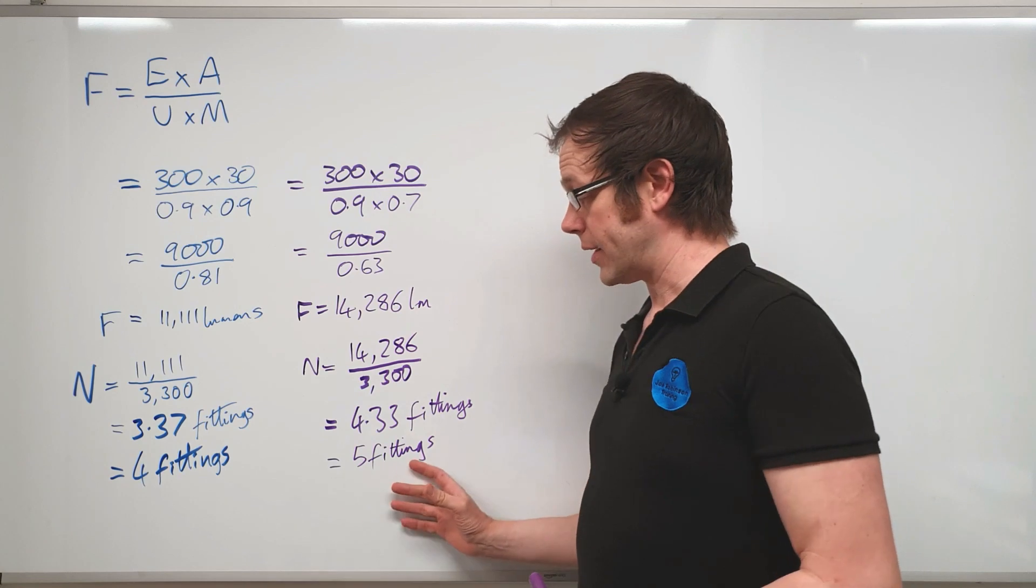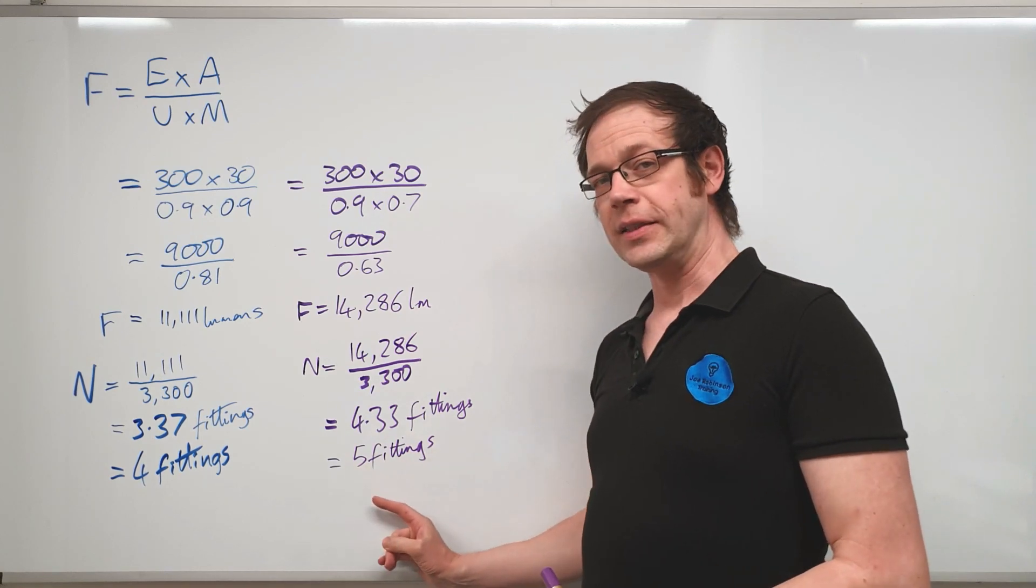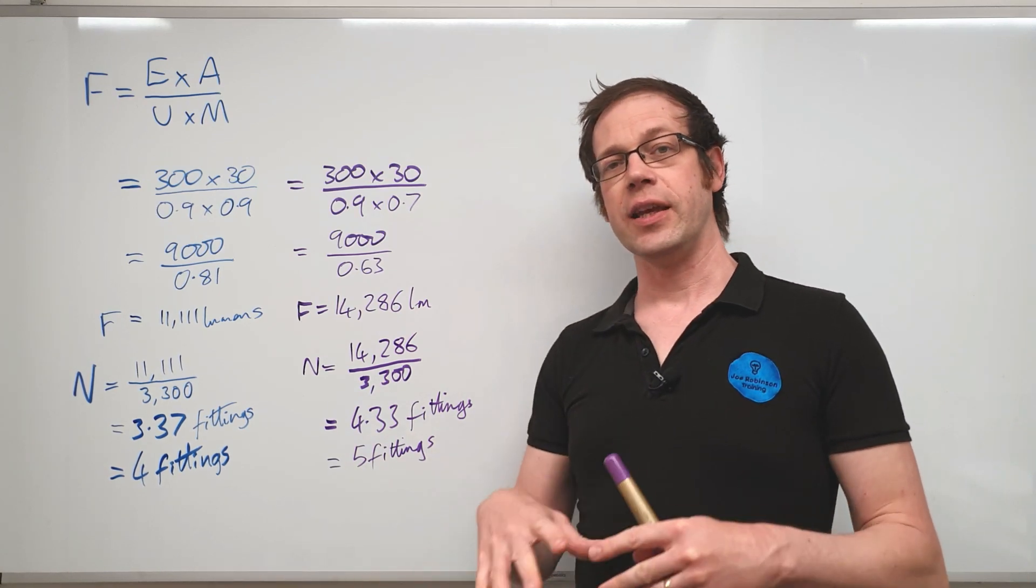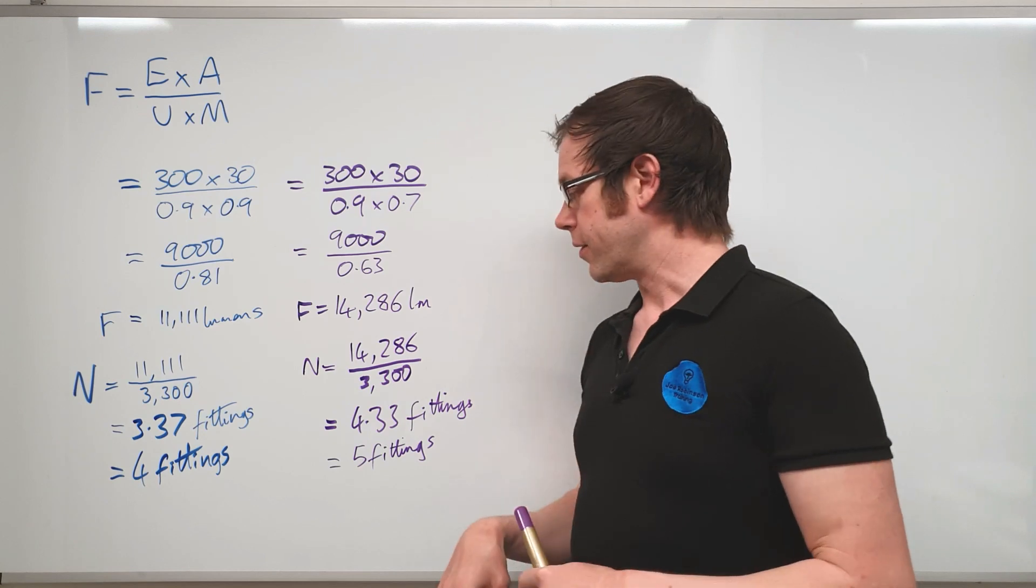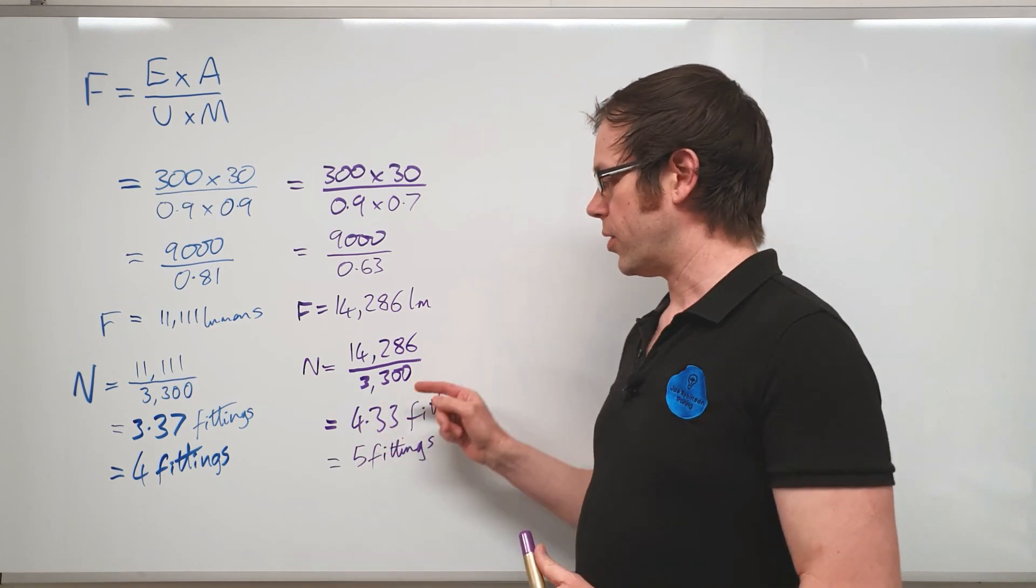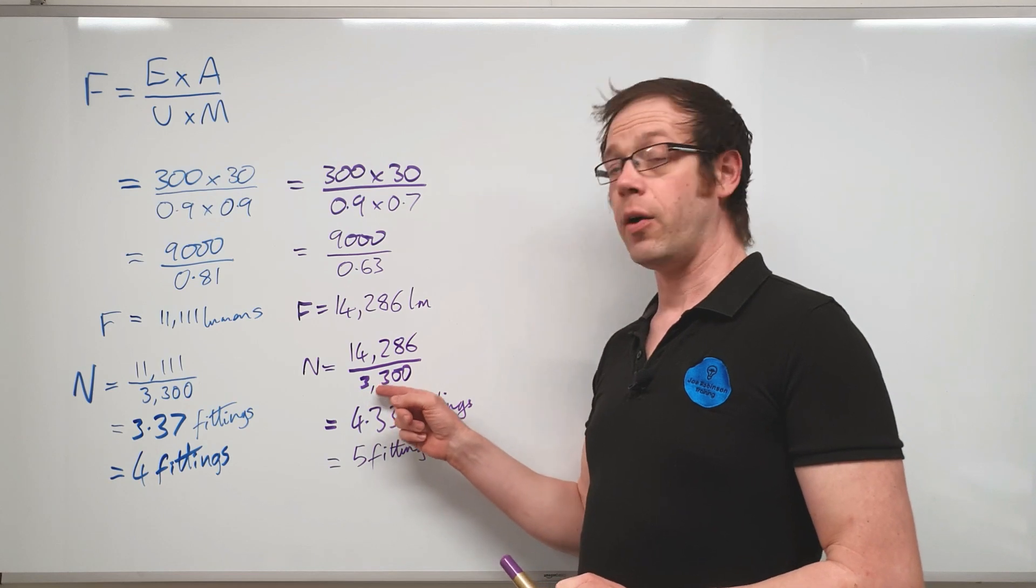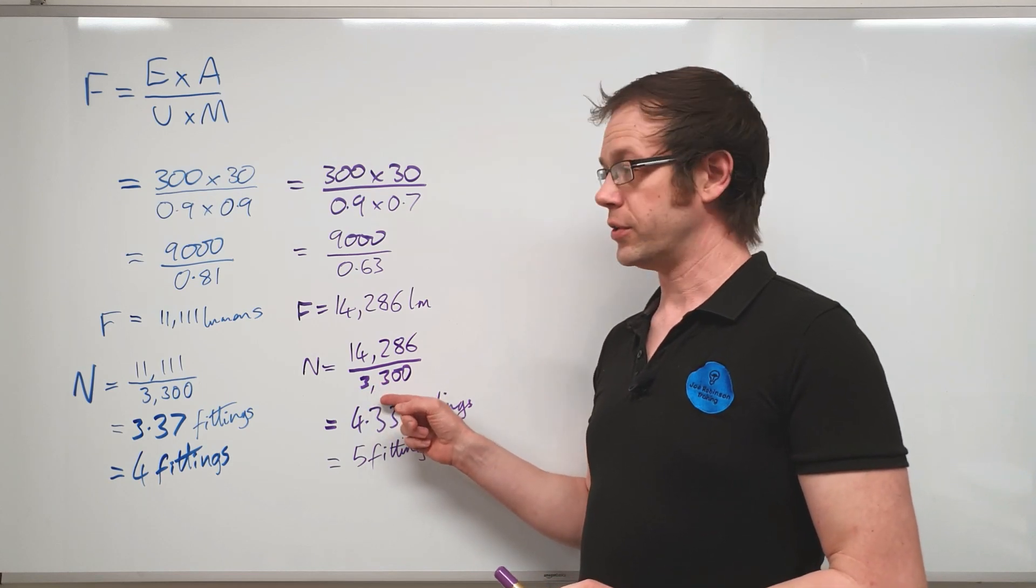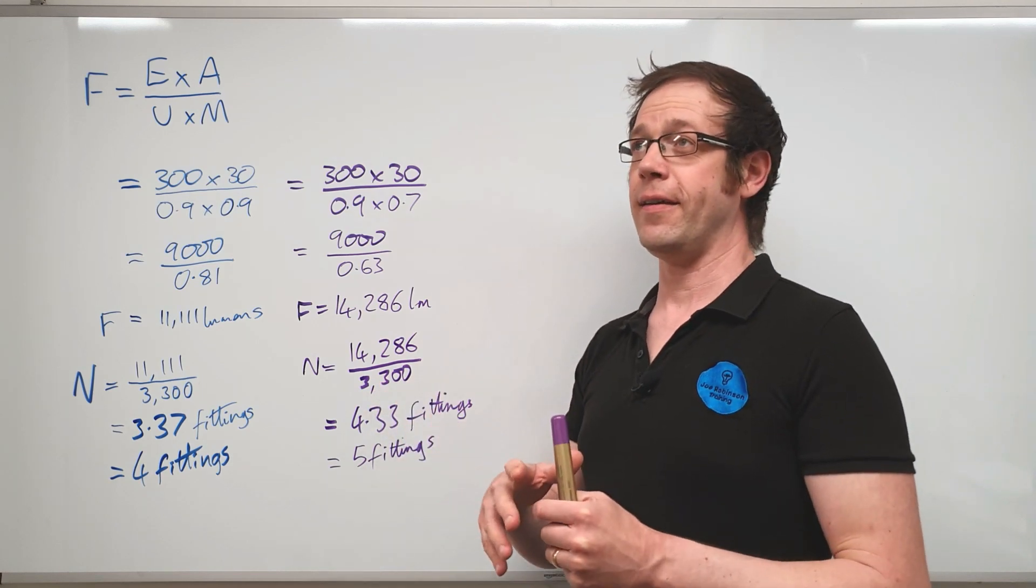If you've got a square room or a rectangular room, it's going to be quite difficult to space out five fittings so that you get a nice spread of light. So what you might end up doing in this case is trying to figure out if there's a fitting that has a slightly lower value of luminous flux.